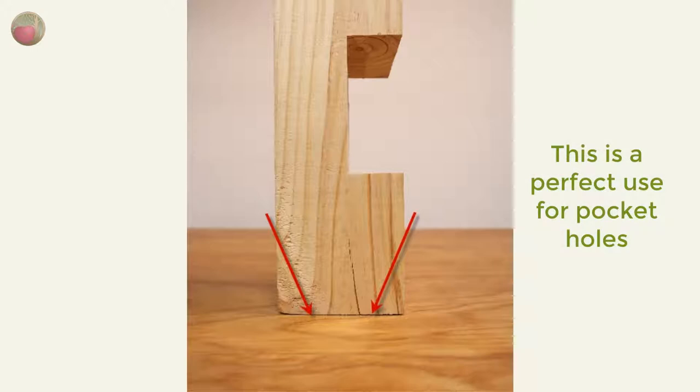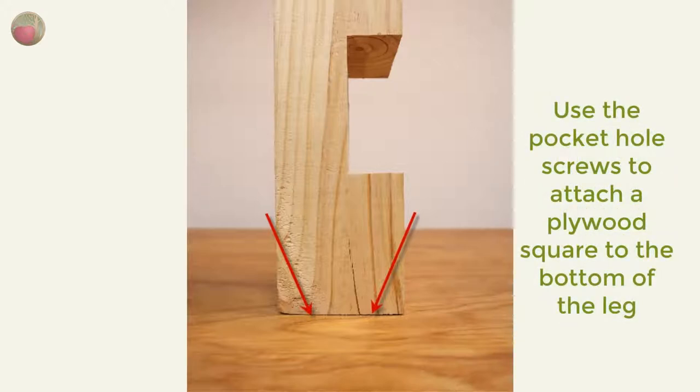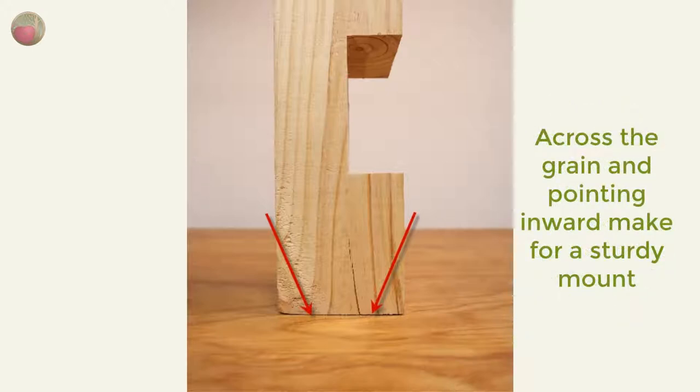Pocket holes on opposite sides of the leg are a super easy and sturdy way to attach a plywood square to the bottom of your bench leg. And you'll screw the caster bolts to that square. The screws are cutting across the grain of the leg and the screws are pointing inward at an angle. This eliminates the side to side shearing even if you hit a bump now and then.